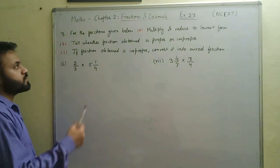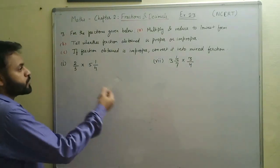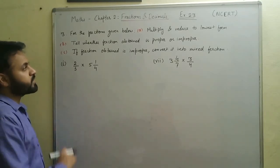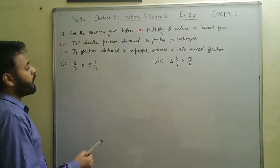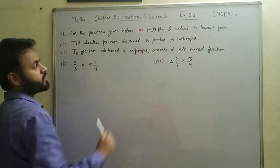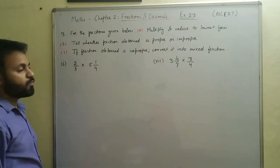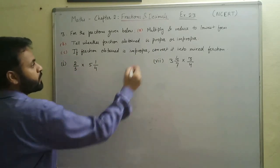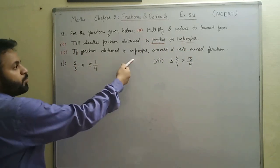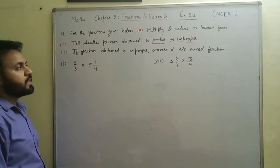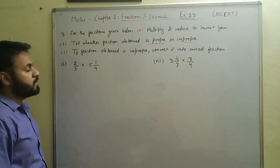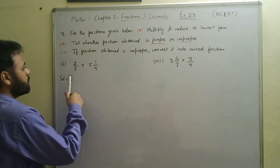Now let's look at question three of Exercise 2.3. It also has seven parts but we'll do only the first and last part. In this question we have to do three things: first multiply and reduce to lowest form if possible, then tell whether the fraction is proper or improper, and third, change any improper fraction into a mixed fraction.